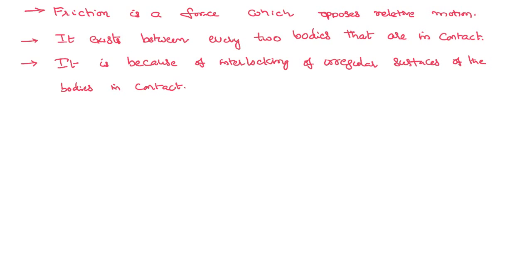Be careful and be clear in understanding that friction is not opposing the motion, rather it is opposing the relative motion. That means if one body is moving over the other body, it actually opposes the relative motion. Whenever one body is in contact with the other body, between them there will be a kind of frictional force. Then why does it occur?